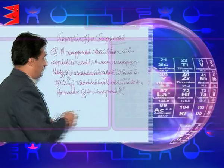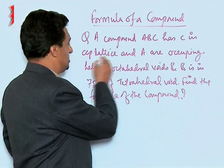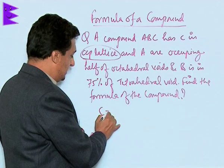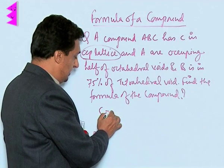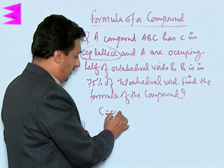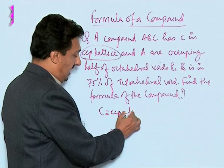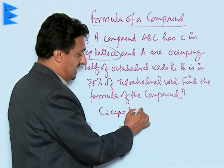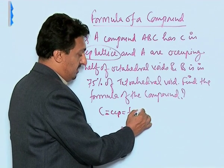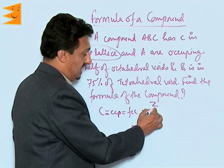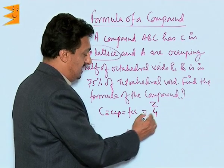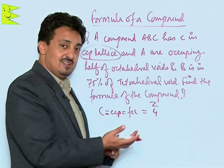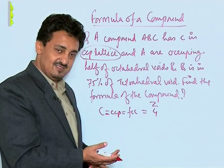From this information, C is in the CCP lattice. If C is in the CCP lattice, it means it is forming an FCC unit cell whose Z is 4. So the number of C atoms per unit cell will be 4, as it represents the corners as well as the face centers.